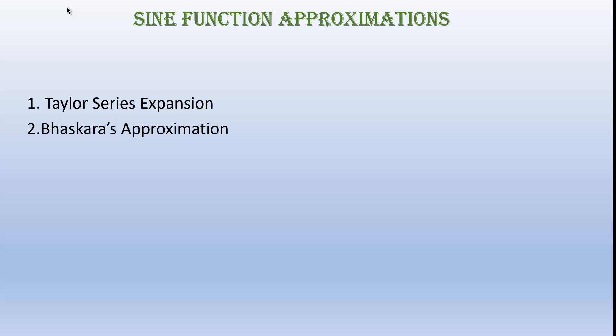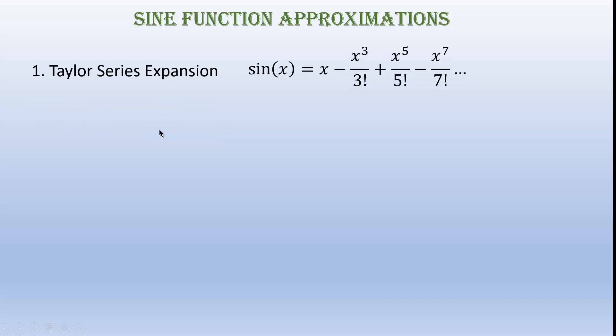The general approximation we can do using Taylor series expansion, which is easy. The drawback of Taylor series expansion is that it does not work for higher values of x. But I present here a new method called Bhaskara's approximation. Bhaskara is one of the greatest mathematicians of India. So first let's go to Taylor series expansion. By Taylor series expansion, the expansion of sine x is in this format, where x is always in radians, and let's check for smaller values of x.